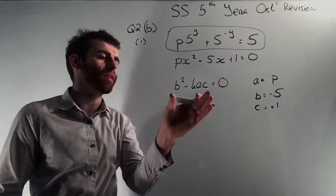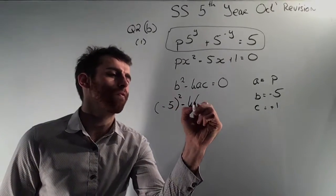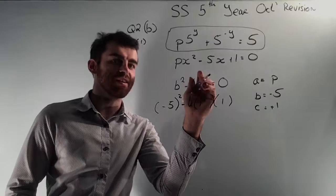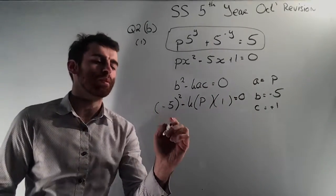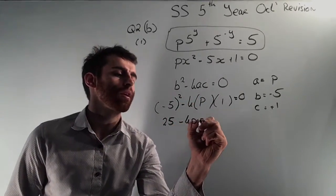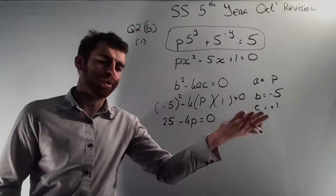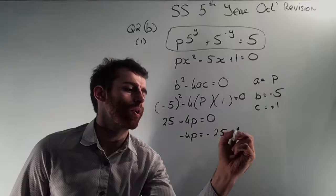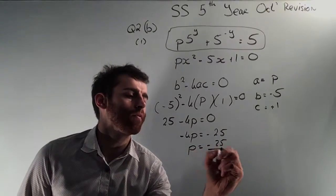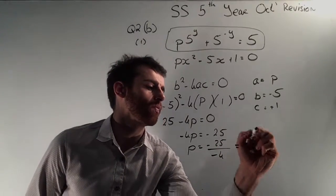Now I can substitute into b squared minus 4ac equals 0 to find p. Instead of b squared I put in minus 5 squared. Minus 4 times a is p, times c is 1, and let it equal 0. Minus by minus gives plus, so 5 times 5 is 25 minus 4p equals 0. I now have one equation, one unknown. Bringing 25 to the other side gives minus 4p equals minus 25. Dividing both sides by minus 4, a minus divided by a minus gives a plus, so p equals 25 over 4.